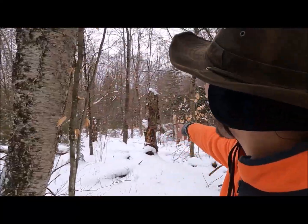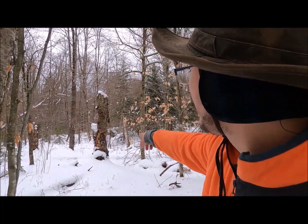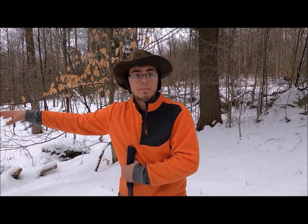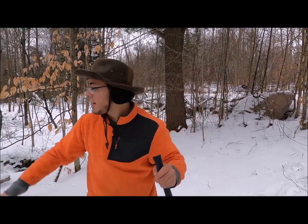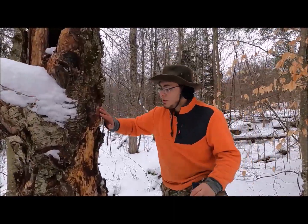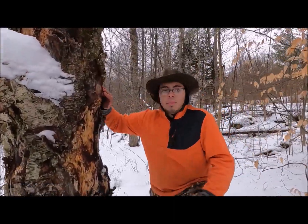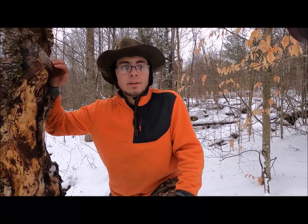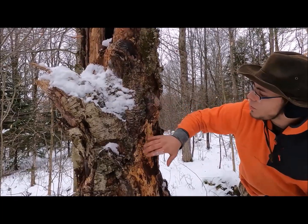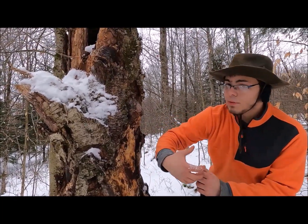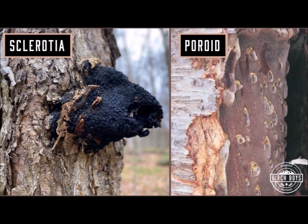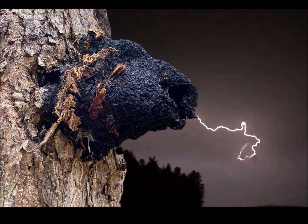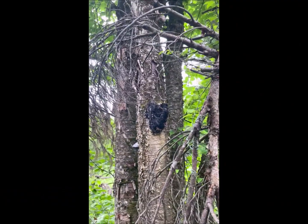That's a beauty — a chaga poroid. This is probably the tree that spread the chaga to this tree. Chaga kills its host tree as it rips open the bark, revealing this porous structure called a poroid.